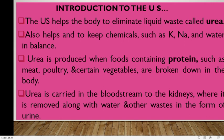The urinary system helps the body eliminate wastes — we term them urea. It also helps to keep chemicals such as potassium, sodium and water in balance. We know potassium is 3.5 to 5 compared to sodium which is 135 to 145. Urea is produced when foods containing proteins such as meat, poultry and vegetables are broken down in the body. Urea is carried in the bloodstream to the kidneys where it is removed along with water and other wastes in the form of urine.